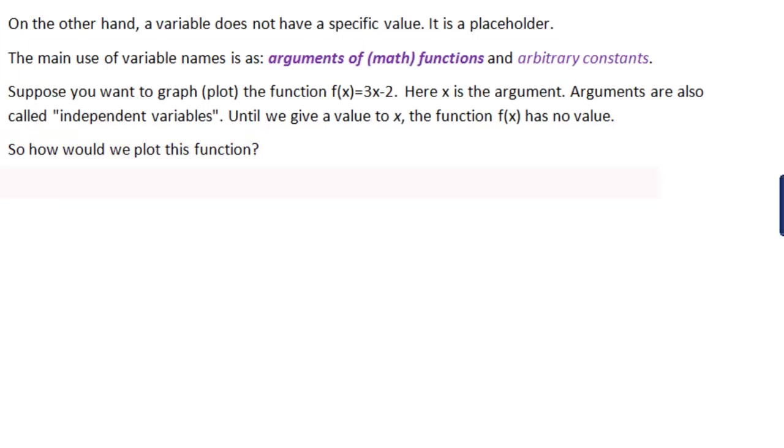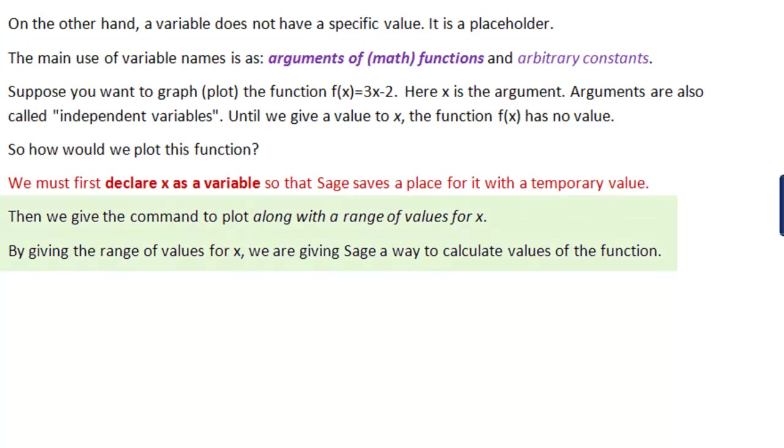But the main question at this moment probably is, how would we plot this function? We must first declare x as a variable so that Sage saves a place for it with a temporary value. Then we give the command to plot along with a range of values for x. By giving the range of values for x, we are giving Sage a way to calculate the values of the function. Again, computers have to have numbers or values. So how do we do that? Here is the basic code. Here is the declaration of the variable x. And here is the basic 2D plot code. Plot 3 times x minus 2 and the range of values for x between minus 5 and 5.